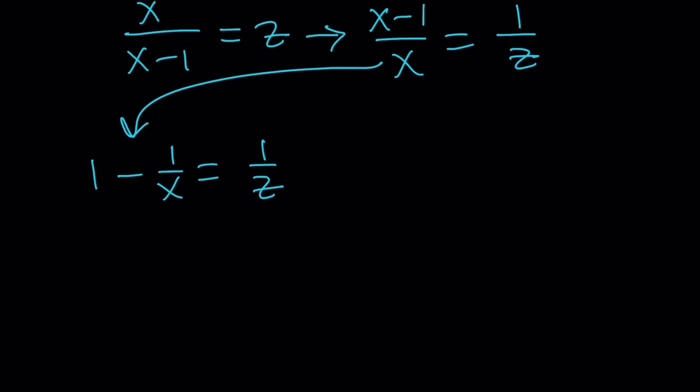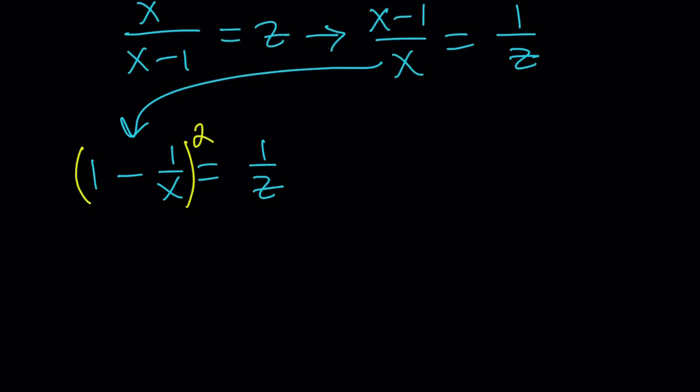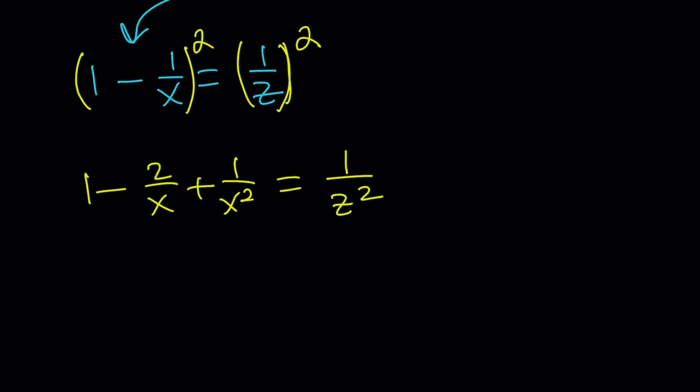And then, we're going to square both sides. Now, when we square both sides, we get the following. 1 minus 2 over x plus 1 over x squared equals 1 over z squared. Awesome. What is so awesome about it? You'll see in a little bit.